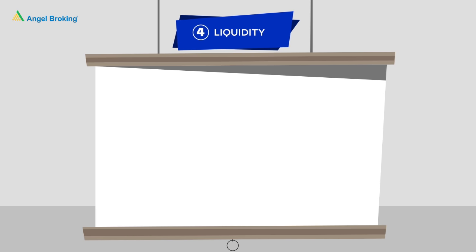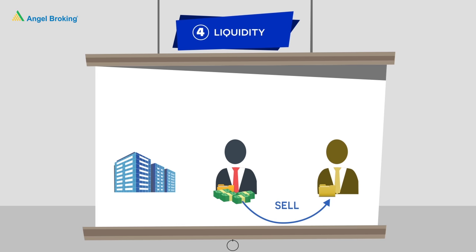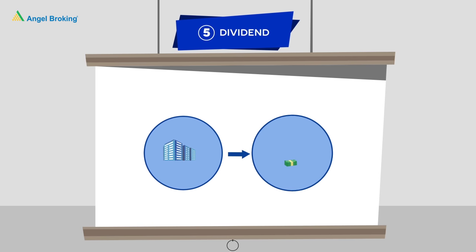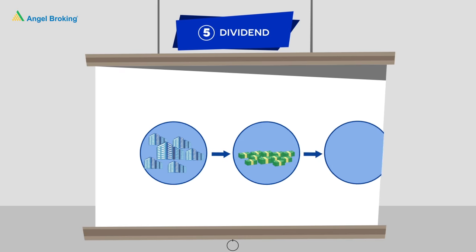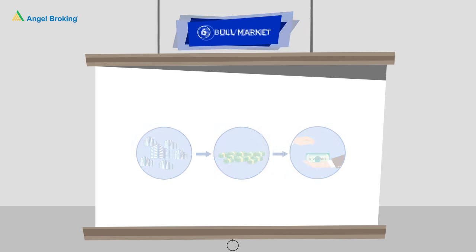4. Liquidity. Liquidity is how easily you can buy or sell a stock and convert it into cash. 5. Dividend. The part of a company's profits which is usually distributed to company shareholders periodically.